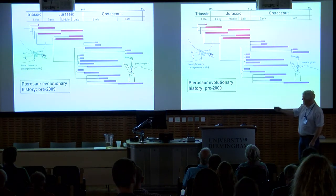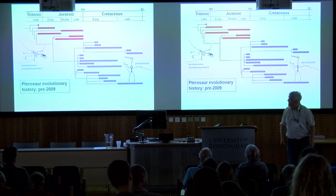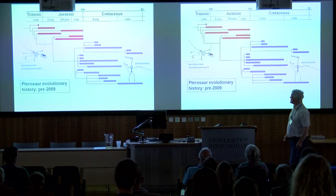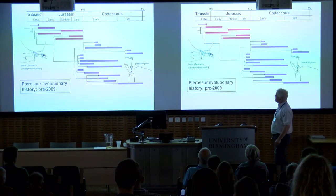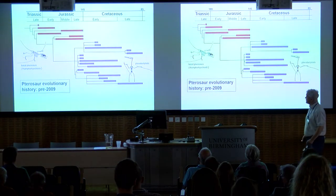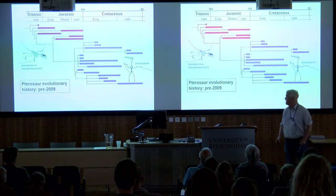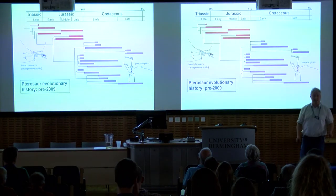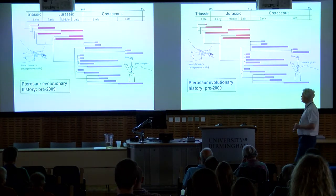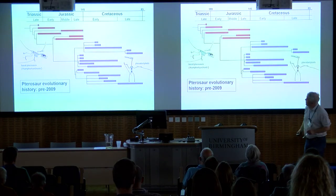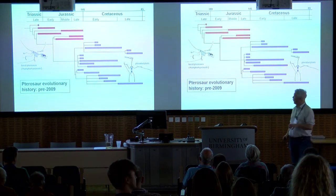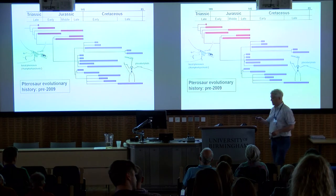In terms of pterosaur evolution, there's a major radiation sometime in the mid to late Triassic. Where they come from, we don't know. There is a second radiation in the mid to late Jurassic, which is of course the origin radiation of pterodactyloids. This is a very important evolutionary event because pterodactyloids went on to dominate aerial environments in the Cretaceous, as my colleagues have alluded to. However, until 2009, we had no idea how basal pterosaurs transformed into pterodactyloids, which was rather frustrating.